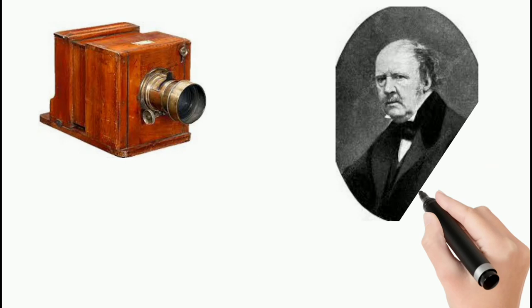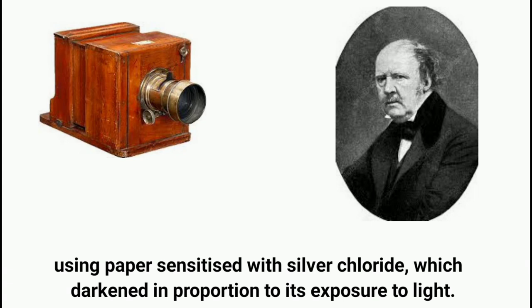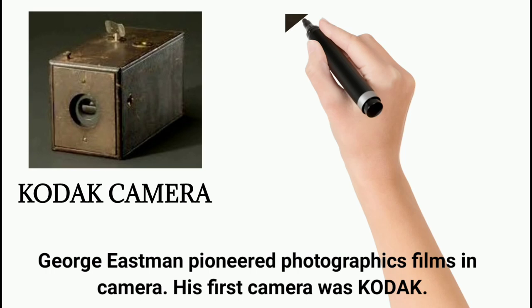George Eastman pioneered photographic films in camera. His first camera was the Kodak. It used a simple box having a fixed lens and a single shutter speed.